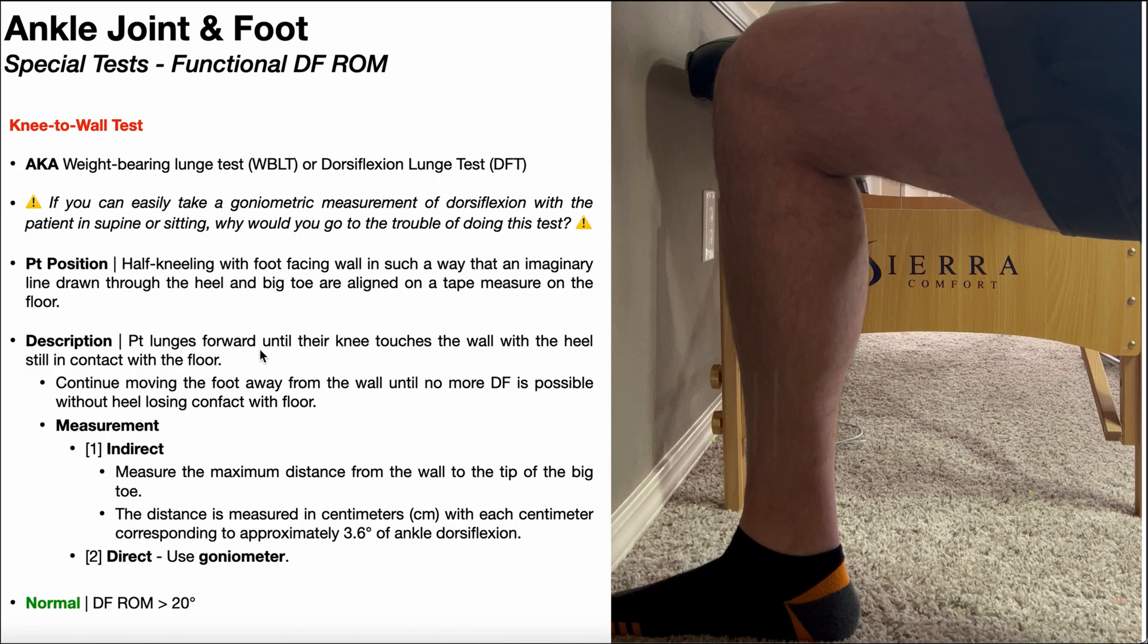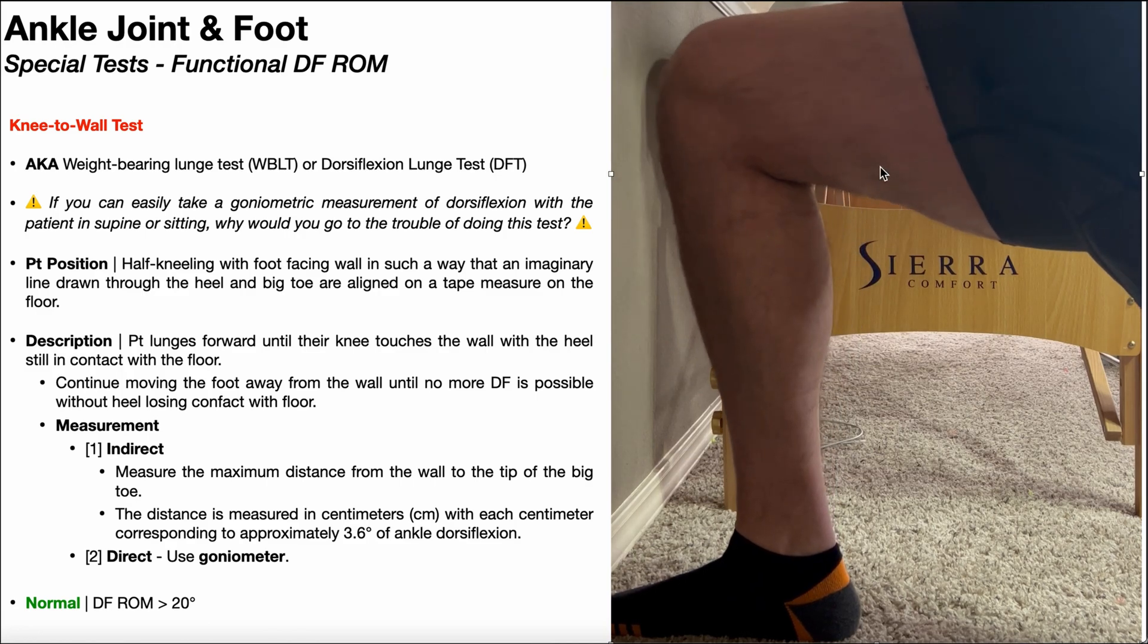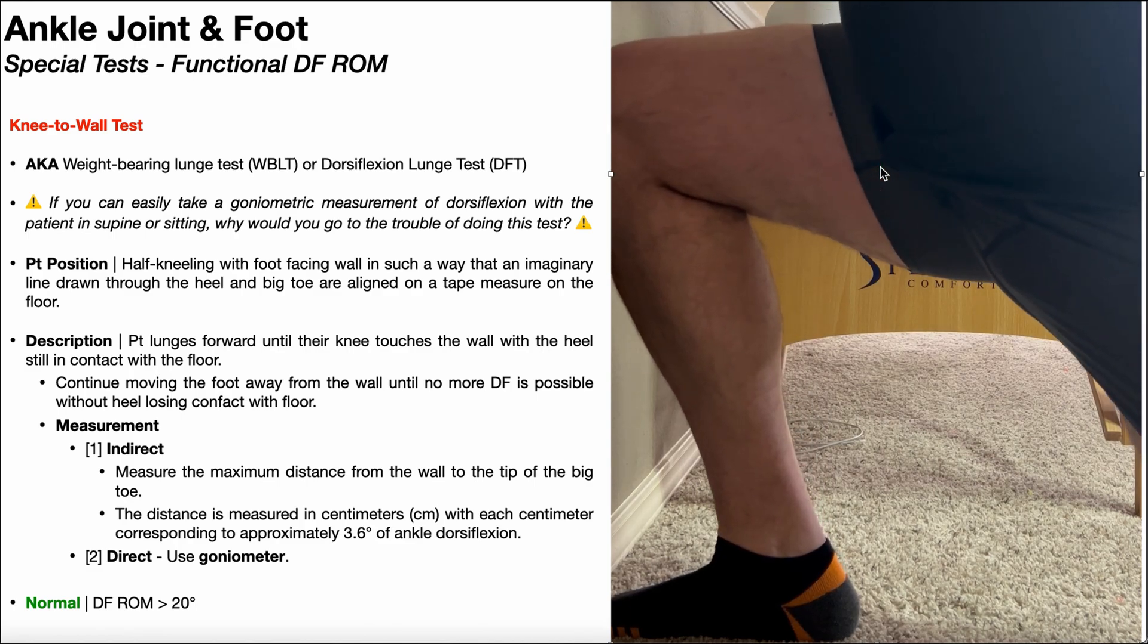So from here, the patient will lunge forward until their knee touches the wall by dorsiflexing in the closed chain with their heel still in contact with the floor. And note that in this initial positioning, my hallux, my great toe, is in contact with the wall in front of me. Let's take a look at what that looks like. So I'm going to dorsiflex forward, try to touch my knee to the wall, which I do right there, and notice I'm attempting to keep my heel in contact with the floor.